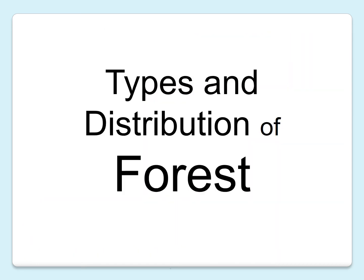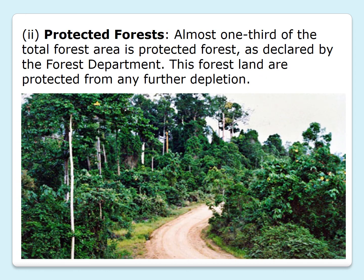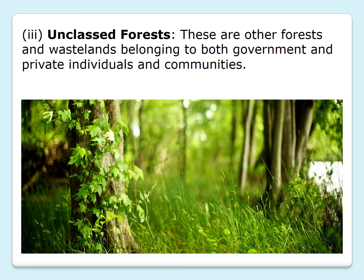The next topic is types and distribution of forests. There are three kinds of forests. First, reserved forests: more than half of the total forest land has been declared reserved forests, regarded as the most valuable as they are taken care of by the government. Second, protected forests: almost one third of the total forest area is protected forests, declared by the forest department, and protected from any further depletion — trees are not allowed to be cut. Third, unclassed forests: these are other forests and wastelands belonging to both government and private individuals or communities — the common forests we find around us.